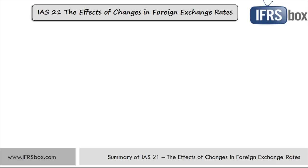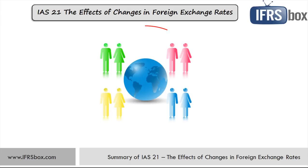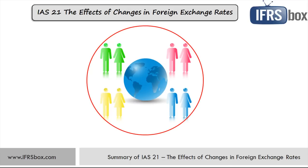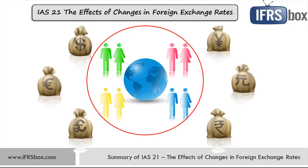Many companies develop foreign activities to spread their businesses beyond borders and grow. There are about 150 different currencies in the world, and on top of that, foreign exchange rates constantly change and move up and down. So how to report all these foreign activities correctly in the financial statements? What rate to select? Let's find out in this video with the summary of IAS 21: the effects of changes in foreign exchange rates.